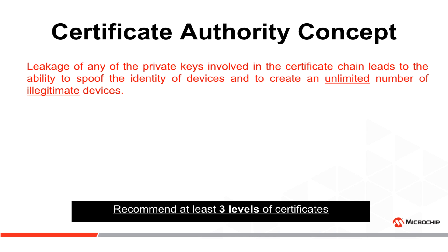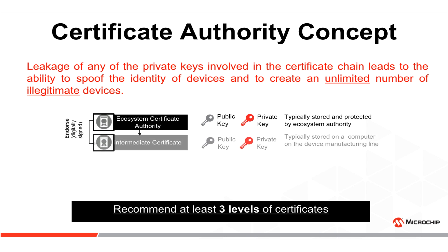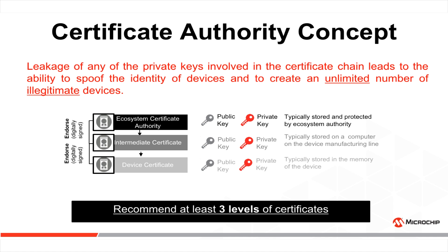To build a certificate chain, we recommend at least three levels of certificates. The higher authority is the ecosystem certificate authority, which is typically stored and protected by the ecosystem authority. The layer underneath is the intermediate certificate, which is stored on a computer on a device manufacturing line, and the manufacturing phase is where one of the possible security flaws can appear. Finally, the lower level certificate is the device level certificate, which is typically stored in the memory of the IoT device — where another security flaw appears.